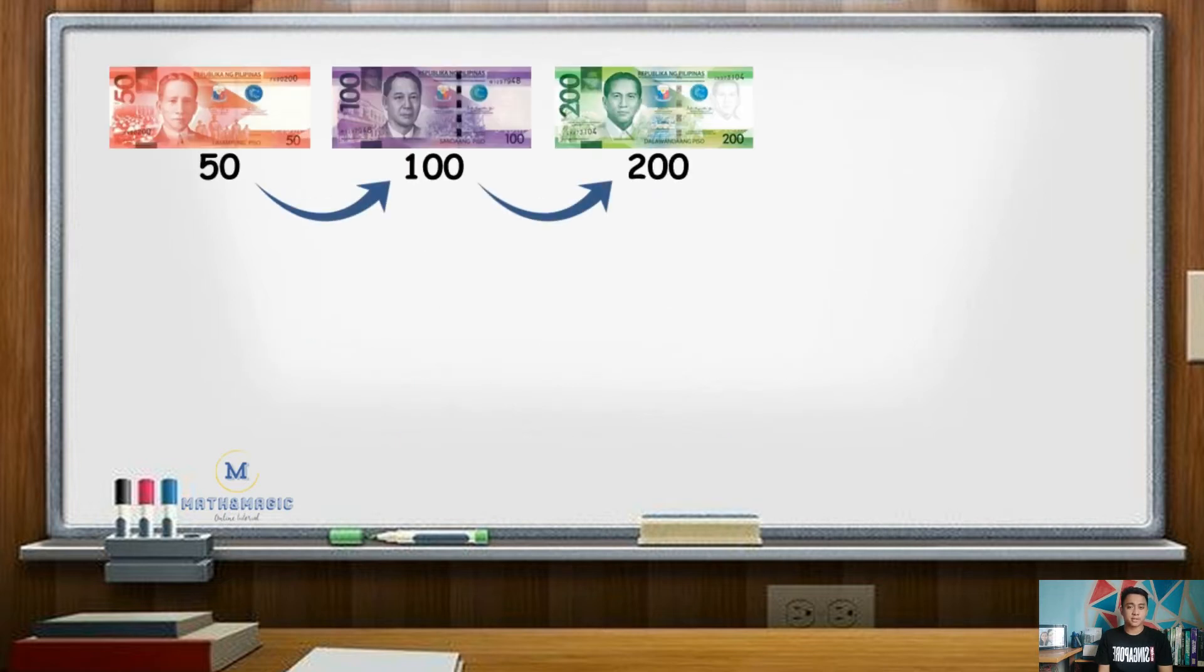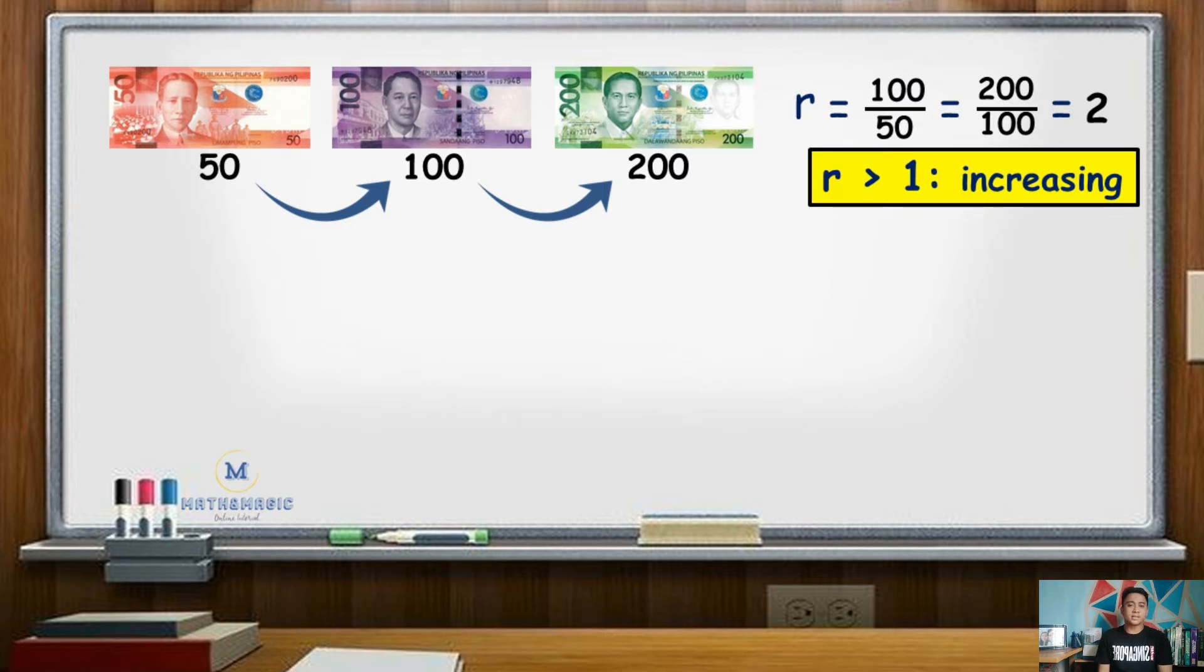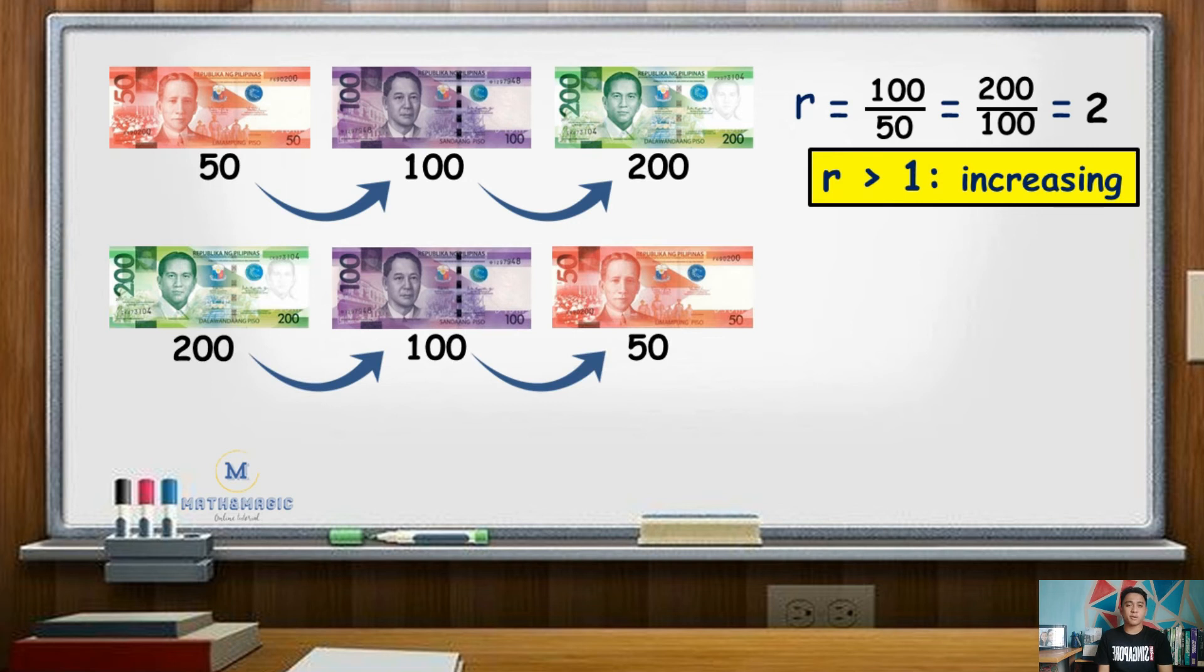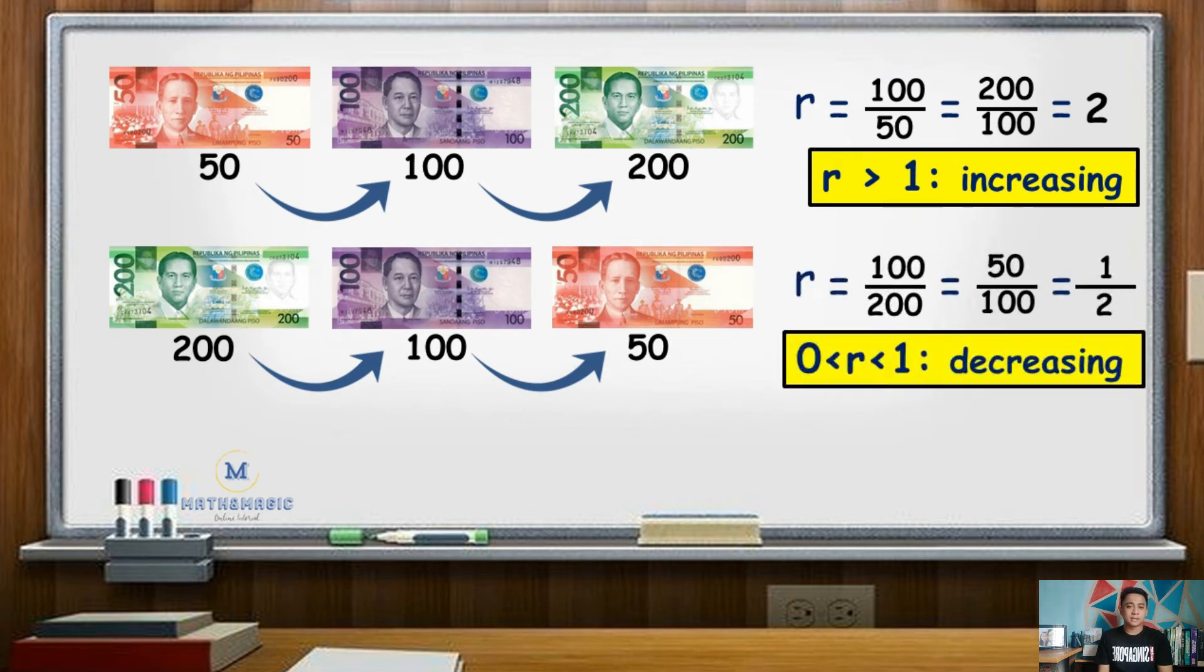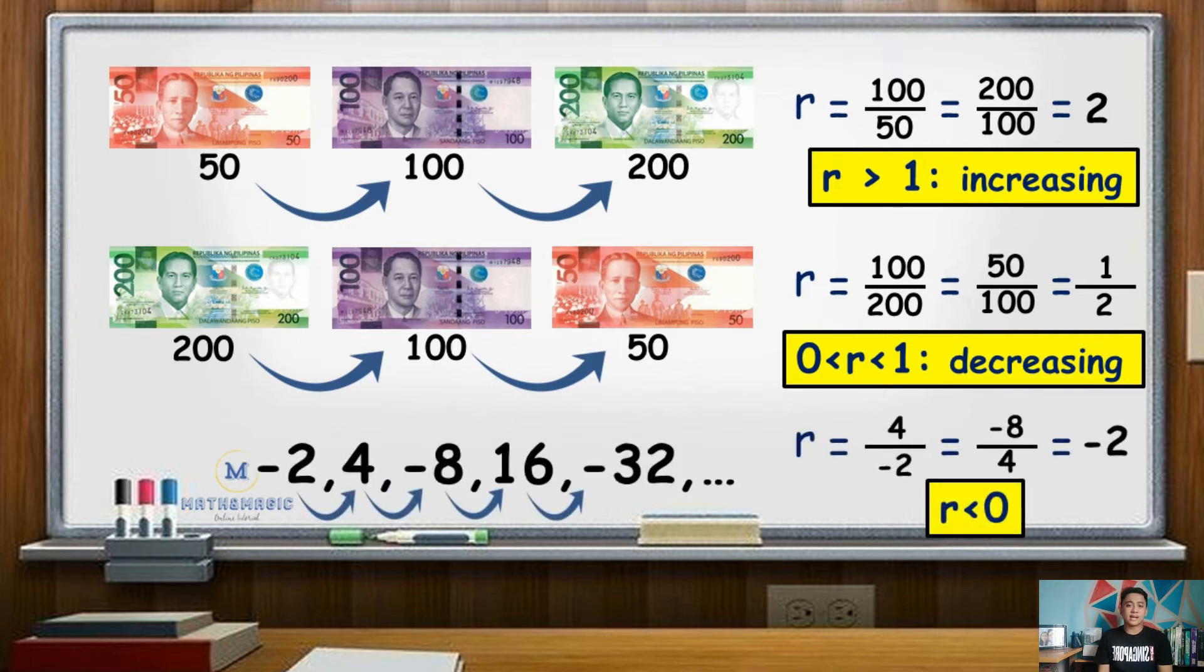Notice that in this set of numbers, since the common ratio is greater than 1, the sequence is increasing. For a sequence where the common ratio is less than 1 but greater than 0, the sequence is decreasing. For a common ratio that is less than 0, the sign of consecutive terms are alternating, meaning they are neither decreasing nor increasing.